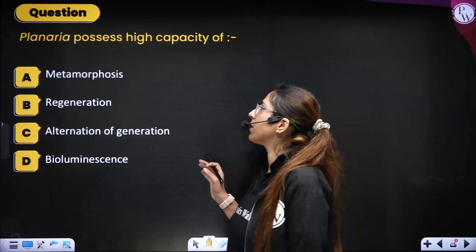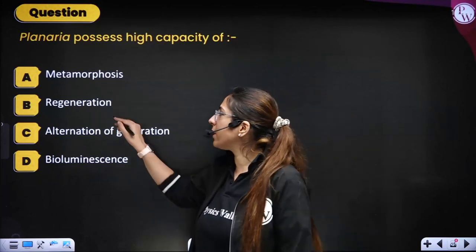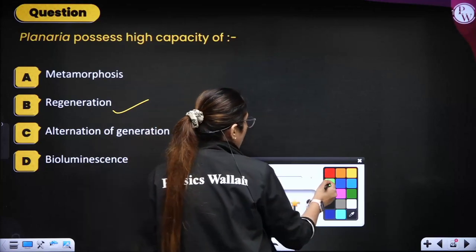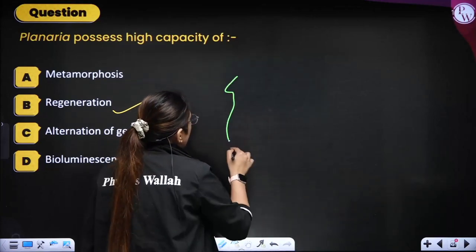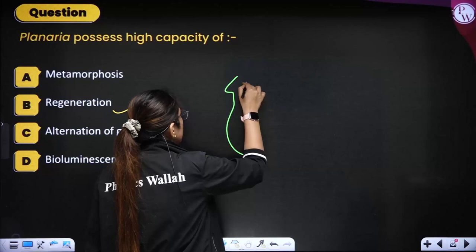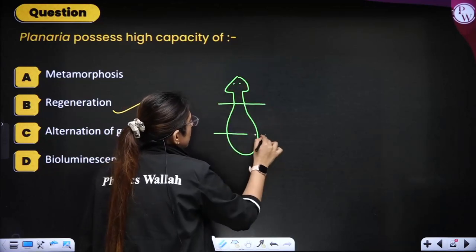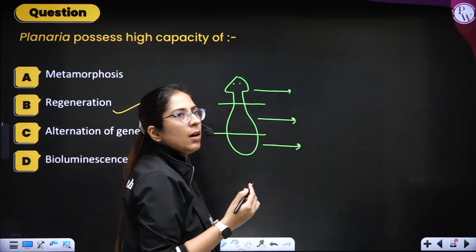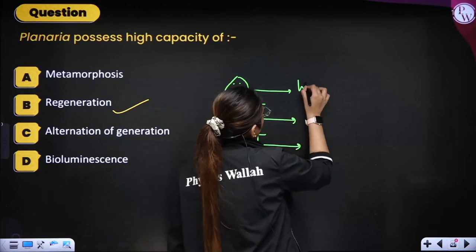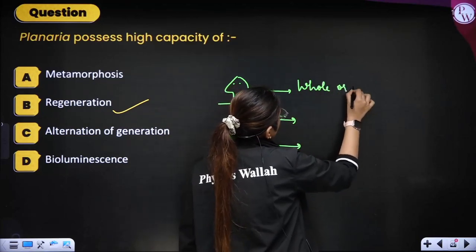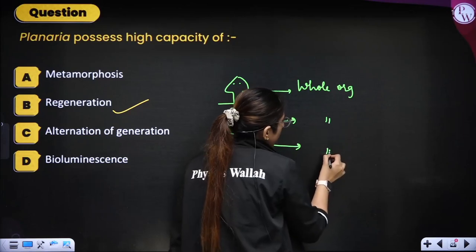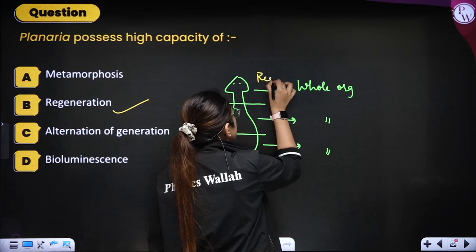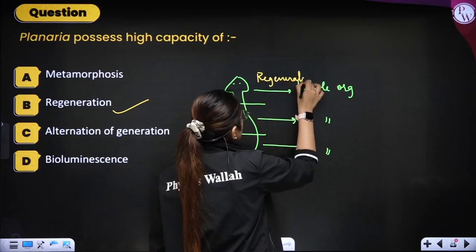Planaria possesses a high capacity of regeneration. When you cut a planaria into parts, each and every part regenerates into a whole organism. This capacity is termed regeneration.